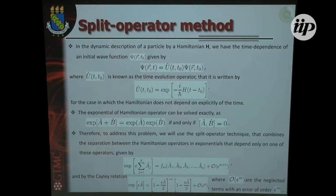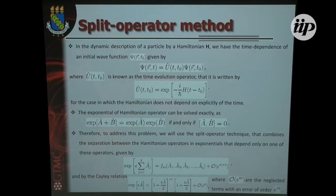This is the technique I use for time propagation. We solve the time-dependent Schrödinger equation, where the general solution is given by: the state at time t is equal to the time evolution operator times the state at the earlier time, where this time evolution operator is given by the exponential of minus i H t over hbar. This is in Sakurai's book. It can be written in this way if the Hamiltonian does not depend explicitly on time.